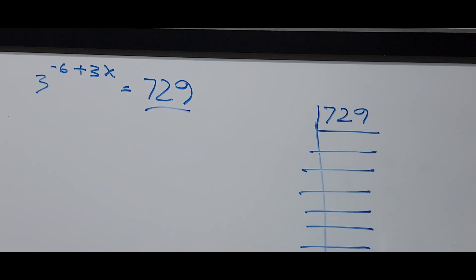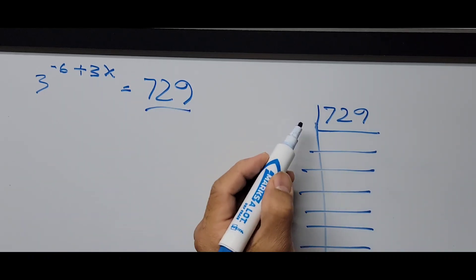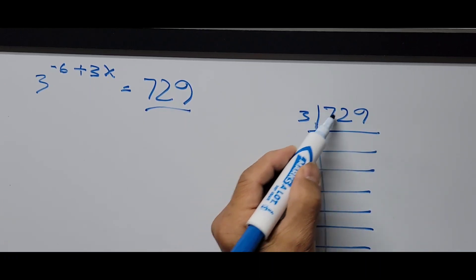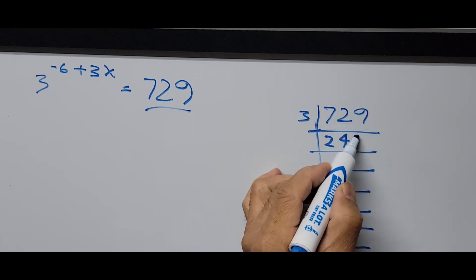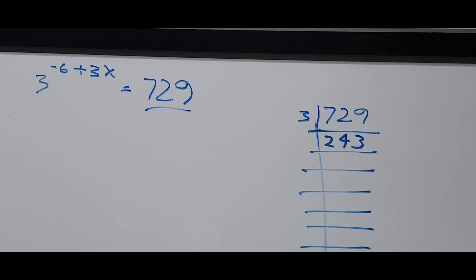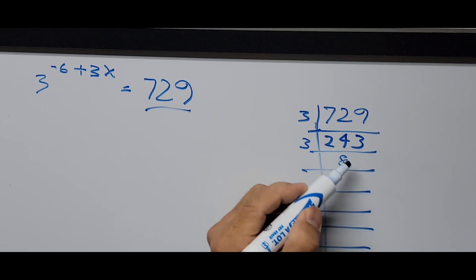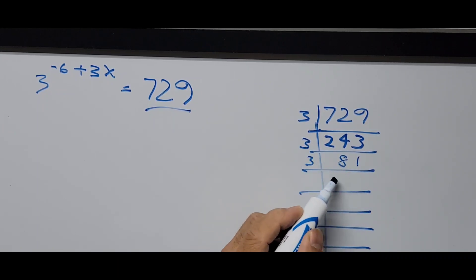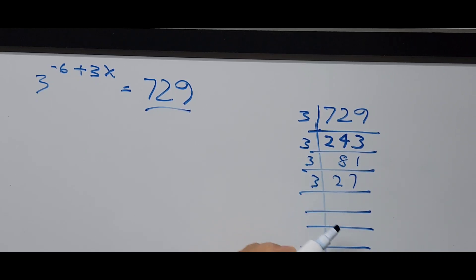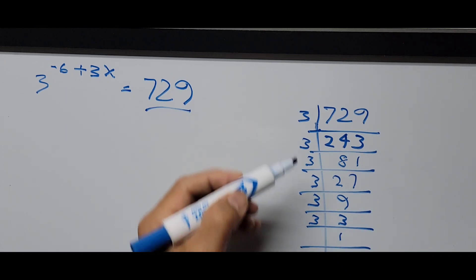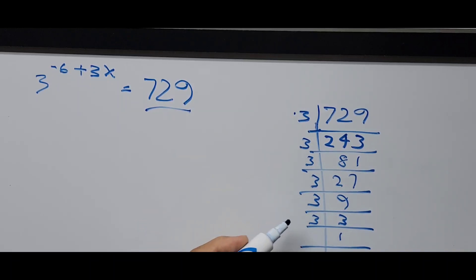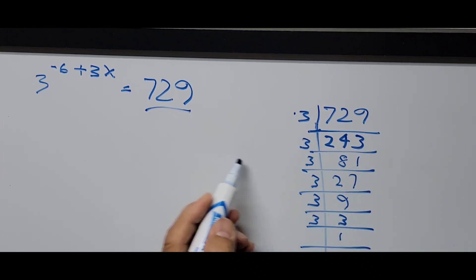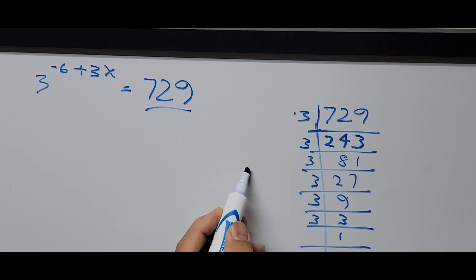So 729 divided by 3 is 243. Dividing 243 by 3 gives 81. Dividing 81 by 3 gives 27. Dividing 27 by 3 gives 9. Dividing 9 by 3 gives 3. And 3 divided by 3 gives 1. We have divided by 3 a total of 6 times, which means 729 equals 3 raised to the 6th power.